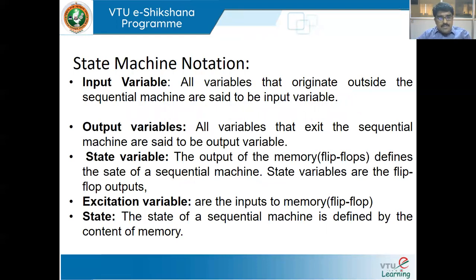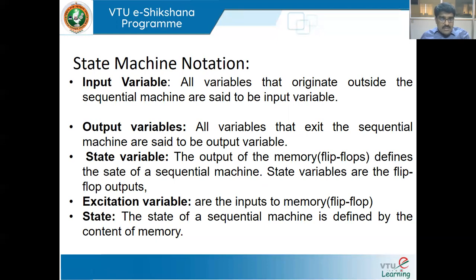Before going to the machines, there are some notations to follow — state machine annotations. First, what is an input variable? All variables that originate outside the sequential machine are said to be input variables. Output variables: all variables that exit the sequential machine are said to be output variables. State variables: the output of the memory, that is a flip-flop, defines the state of a sequential machine — state variables are the flip-flop outputs.